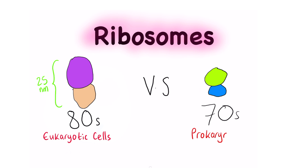We also have the 70S ribosomes, and they are found in prokaryotic cells. You can find them in the mitochondria, and in plants they're in the chloroplasts. The 70S ribosomes are slightly smaller than the 80S ones.